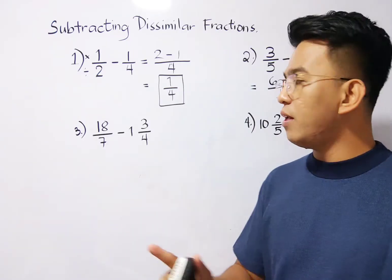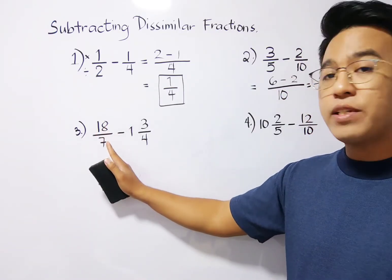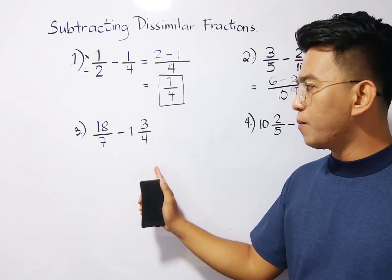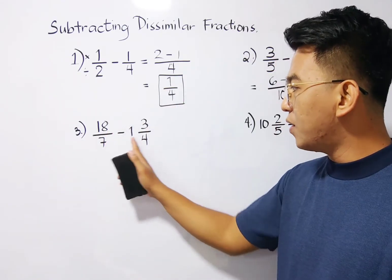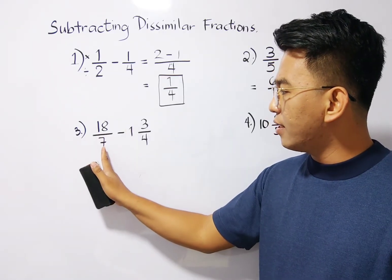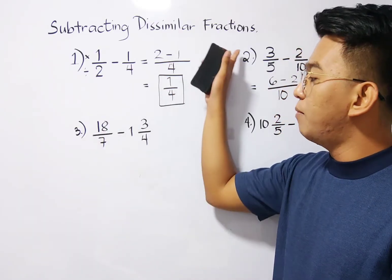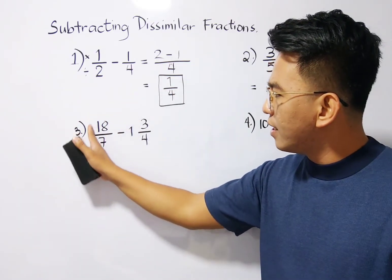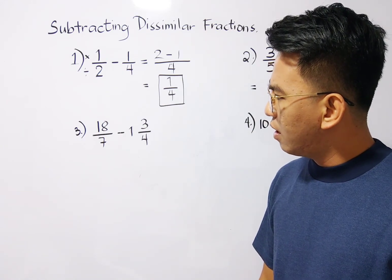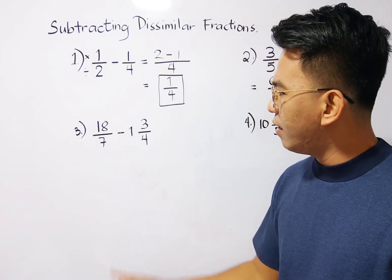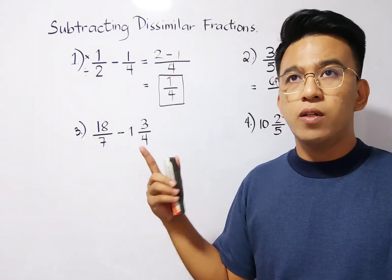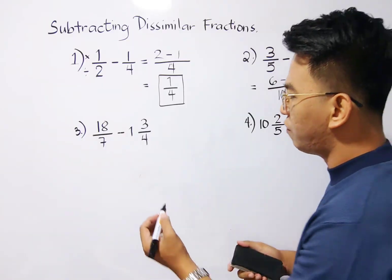Now let's move on with number 3. For number 3, we have here 18 over 7 minus 1 and 3 over 4. This one is an improper fraction minus a mixed number. But, in this case, this one is under dissimilar fractions.